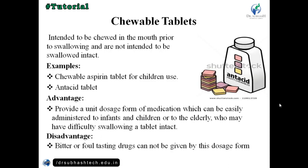Chewable tablets are intended to be chewed in the mouth prior to swallowing and are not intended to be swallowed intact. Examples include chewable aspirin tablets, particularly for children, and antacid tablets. Advantages: they provide a unique dosage form that can be easily administered to infants, children, or elderly persons who may have difficulty swallowing a tablet. Disadvantages: bitter or foul-tasting drugs cannot be administered by this route.